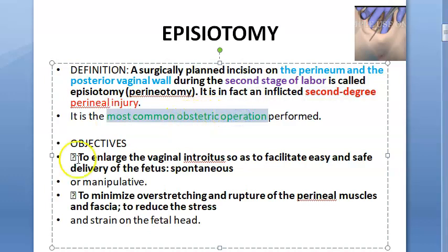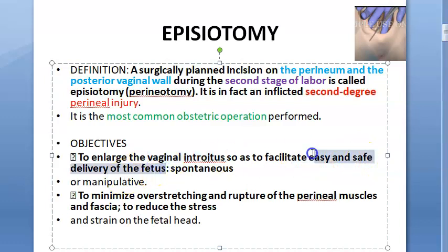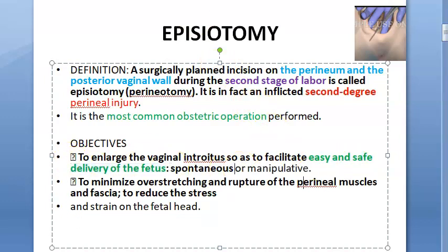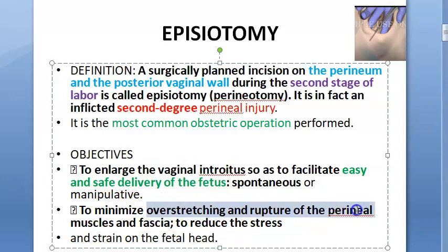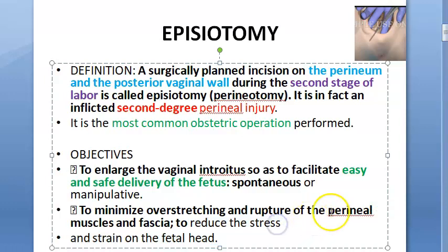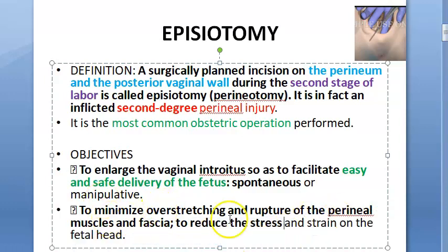This is the most common obstetric operation. Now let us see the objectives — what are you trying to achieve by this? To enlarge the vaginal introitus so as to facilitate easy and safe delivery of the fetus. You are concerned more about the fetus — easy and safe delivery. You can let the fetus come out spontaneously or you can manipulate it, using instruments also. For the mother: minimizing the overstretching and rupture of the perineal muscles and fascia, to reduce the stress and strain on the fetal head.